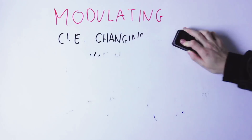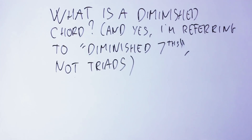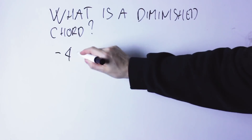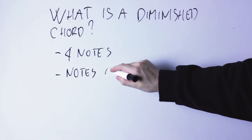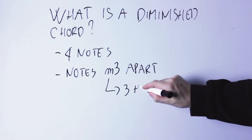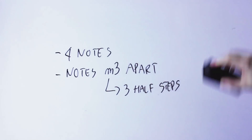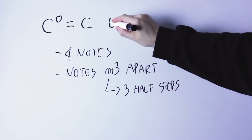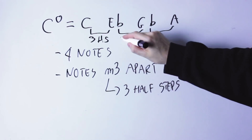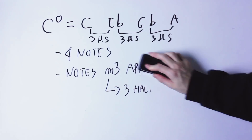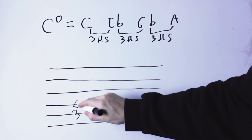But first of all, let's see what a diminished chord actually is. A diminished chord is a chord of four notes and every note is a minor third above the previous note — that is three half steps. So for instance, the C diminished chord has notes C, then E flat which is three half steps above C, then G flat which is three half steps above E flat, and then A which is three half steps above G flat.